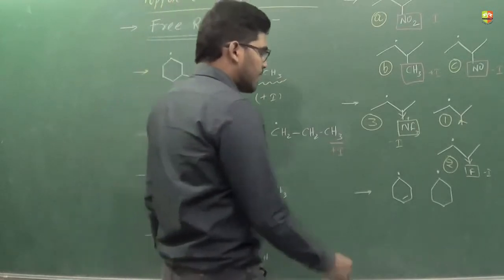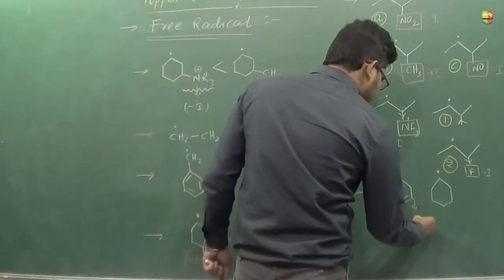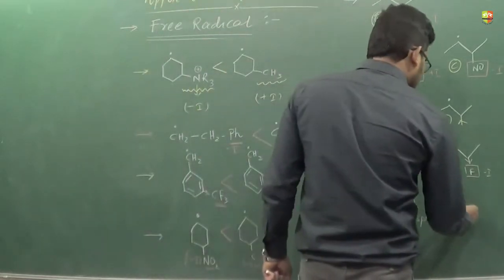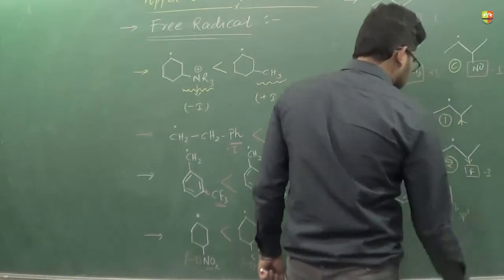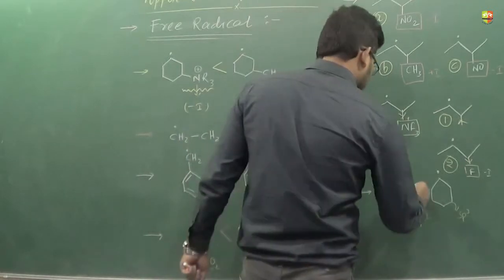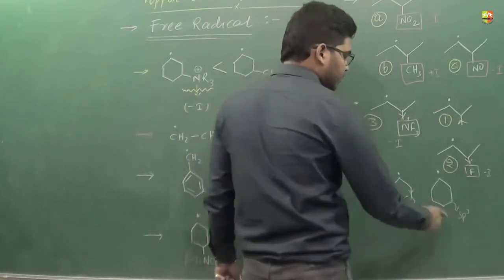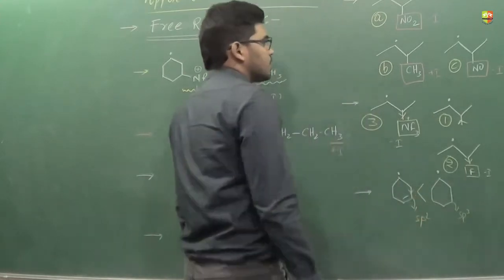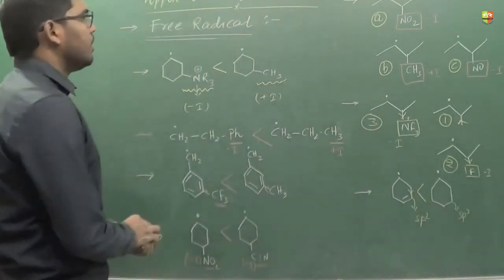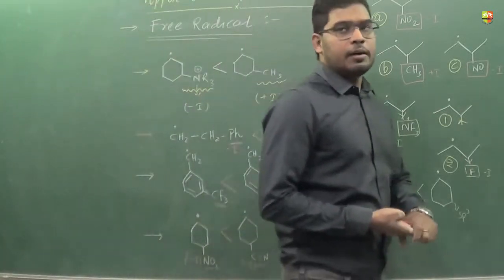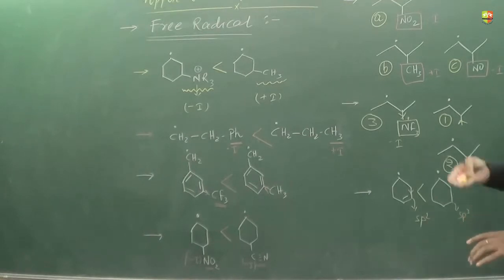Now you see this carbon atom is sp2 hybridized, and this carbon atom if you compare is sp3 hybridized. Which one is more electronegative? Obviously sp2. This has more electron withdrawing nature comparatively, and hence the stability of the second one is more than that of the first one. So these are a few examples we have discussed on the stability of free radical on the basis of IFX.